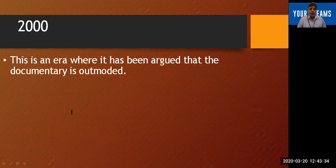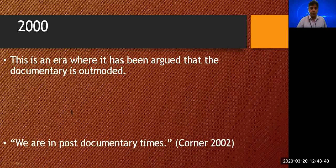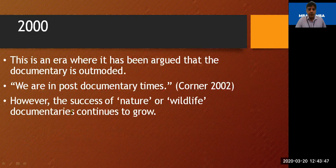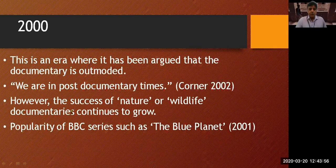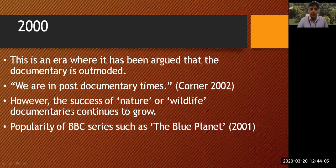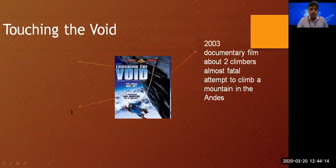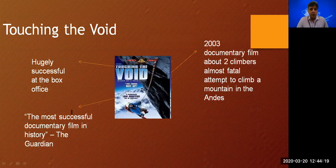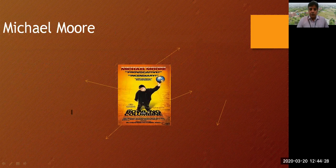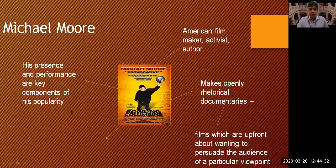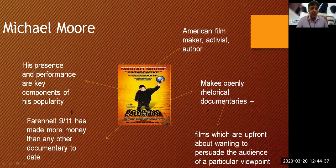By 2000, documentary filmmaking changed entirely. It has been argued that the documentary is outmoded — Korner in 2002 says we are in post-documentary times. However, nature and wildlife documentaries continued to grow in popularity, such as BBC series like The Blue Planet and Planet Earth. Cinematic documentaries like Touching the Void also gained popularity, produced in 2003. Then came the era of Michael Moore, whose film Fahrenheit 9/11 made more money than any other documentary to that date.